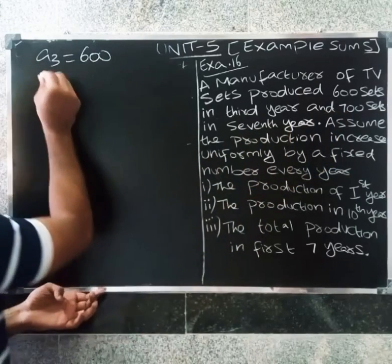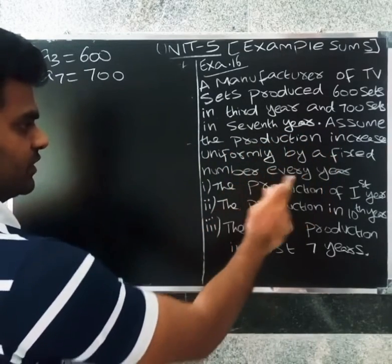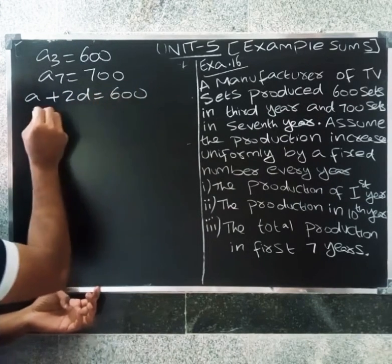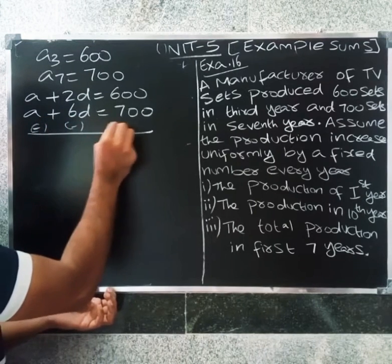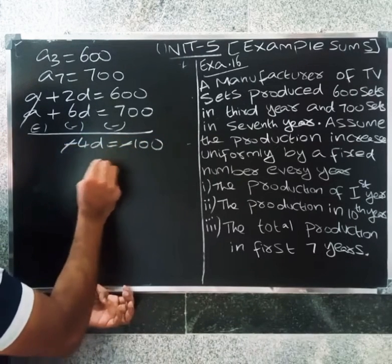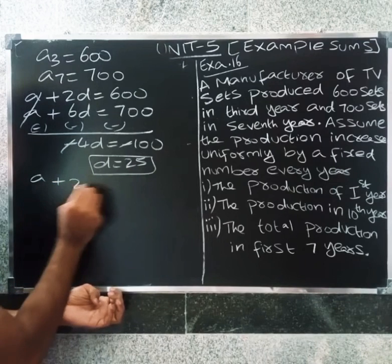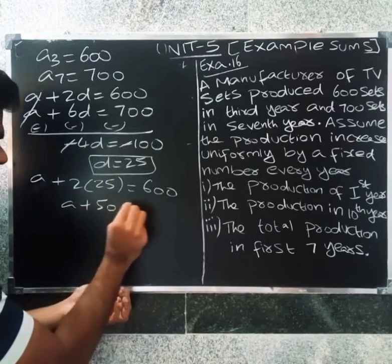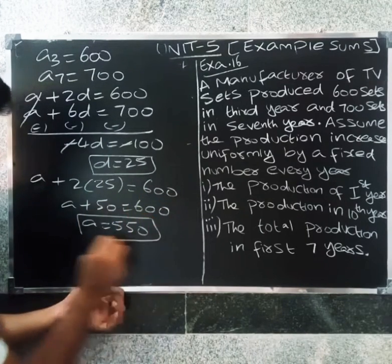And 700 sets in the seventh year. Assume that production increases uniformly by a fixed number every year. So a3 equal to 600 gives a plus 2d equal to 600, and a7 equal to 700 gives a plus 6d equal to 700. Subtracting, minus 4d equals minus 100, so d equals 25. Substituting d equals 25 into the first equation: a plus 2 into 25 equals 600, so a plus 50 equals 600, giving a equal to 550.